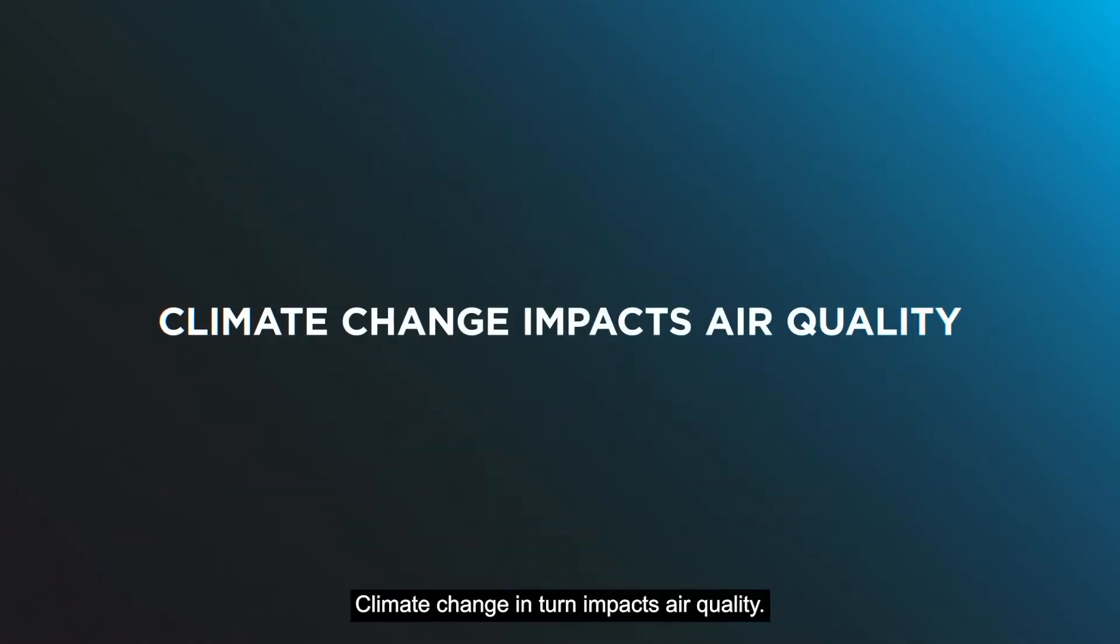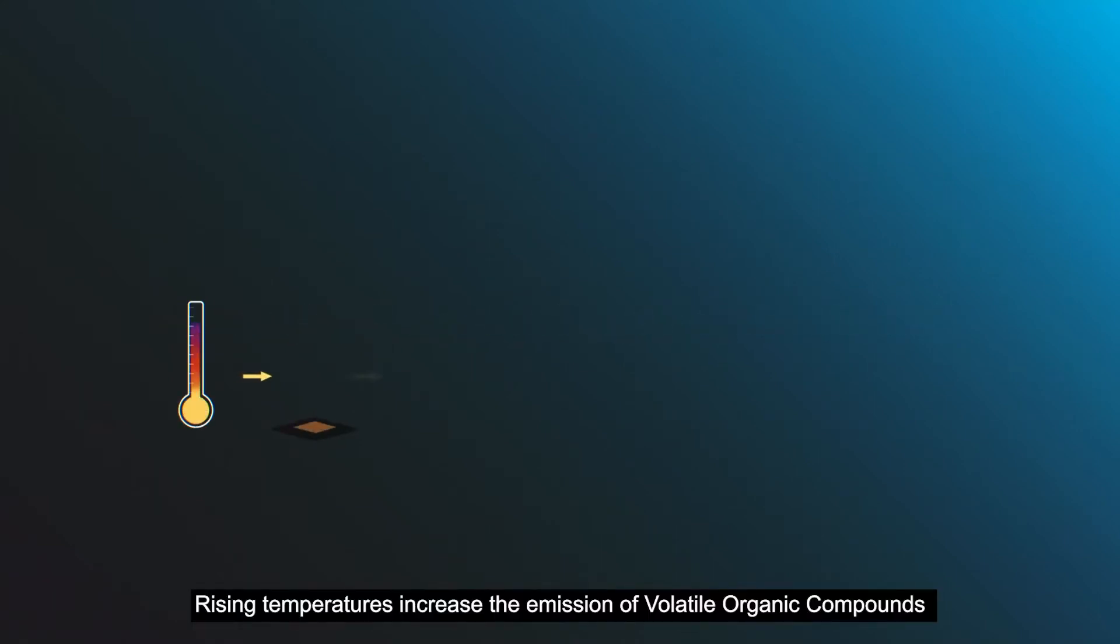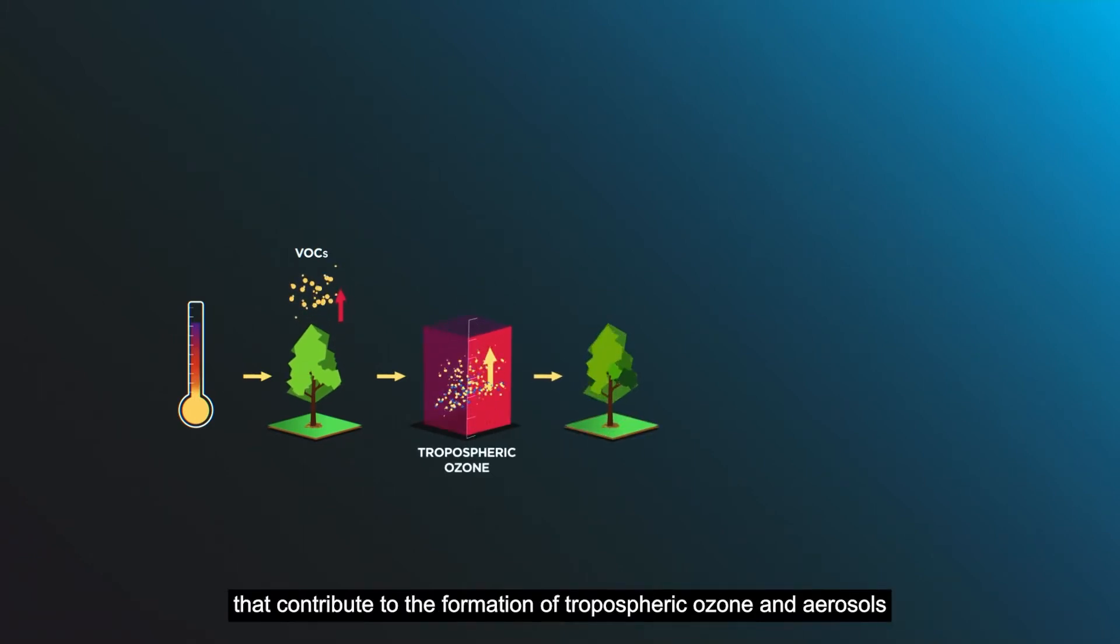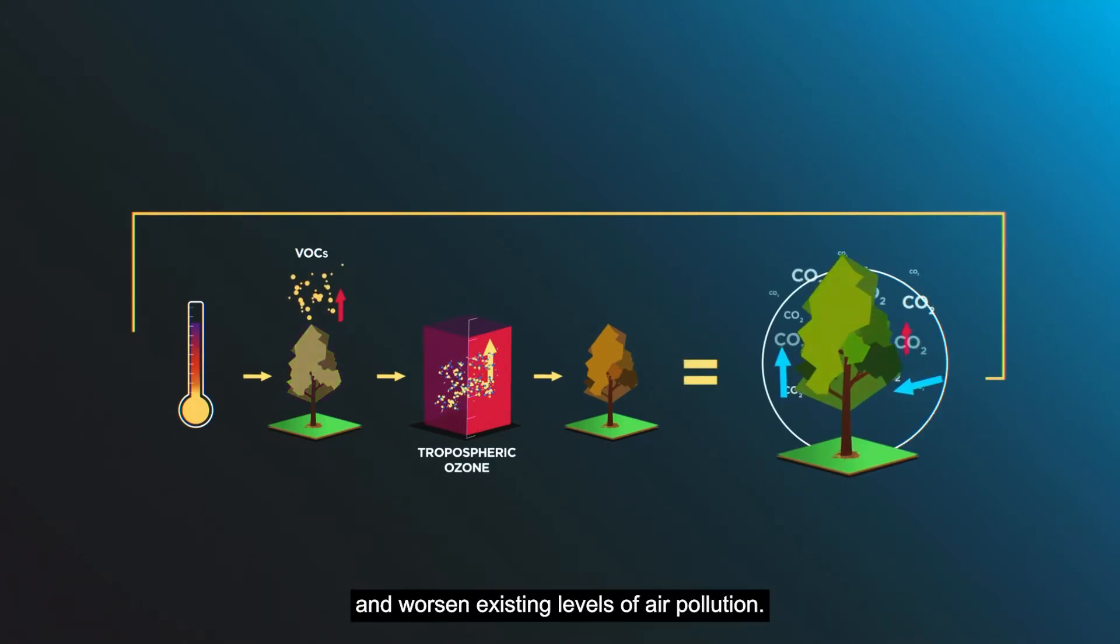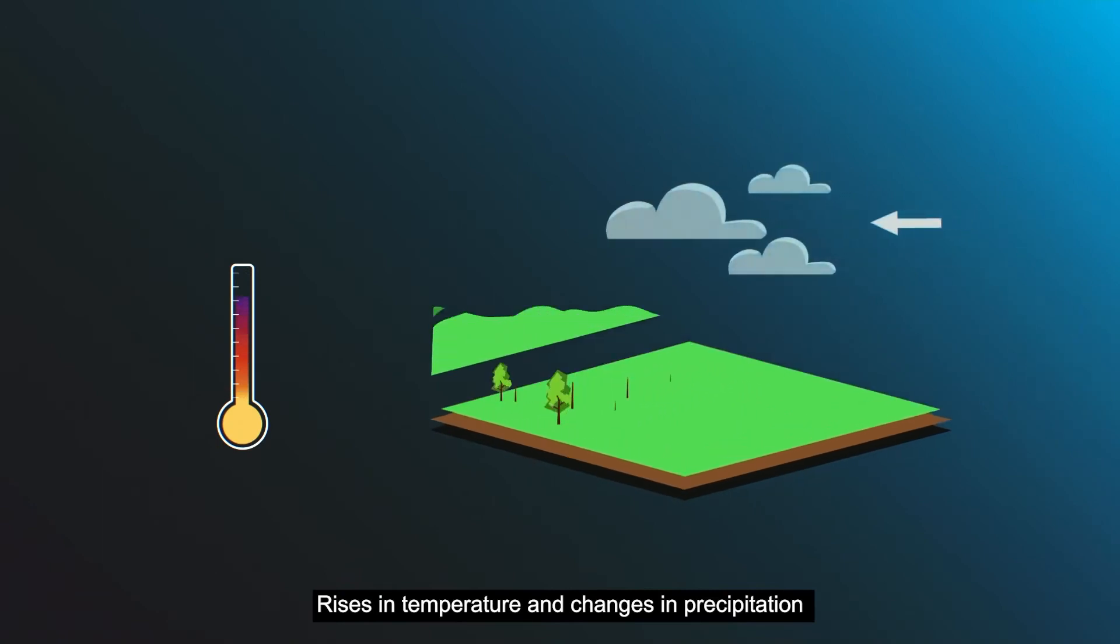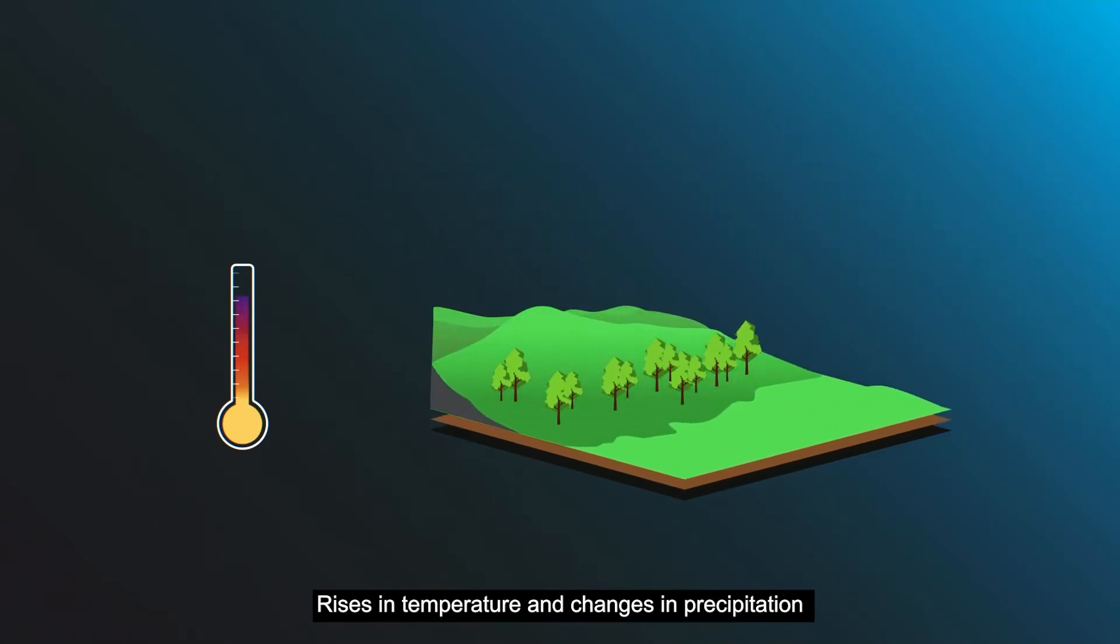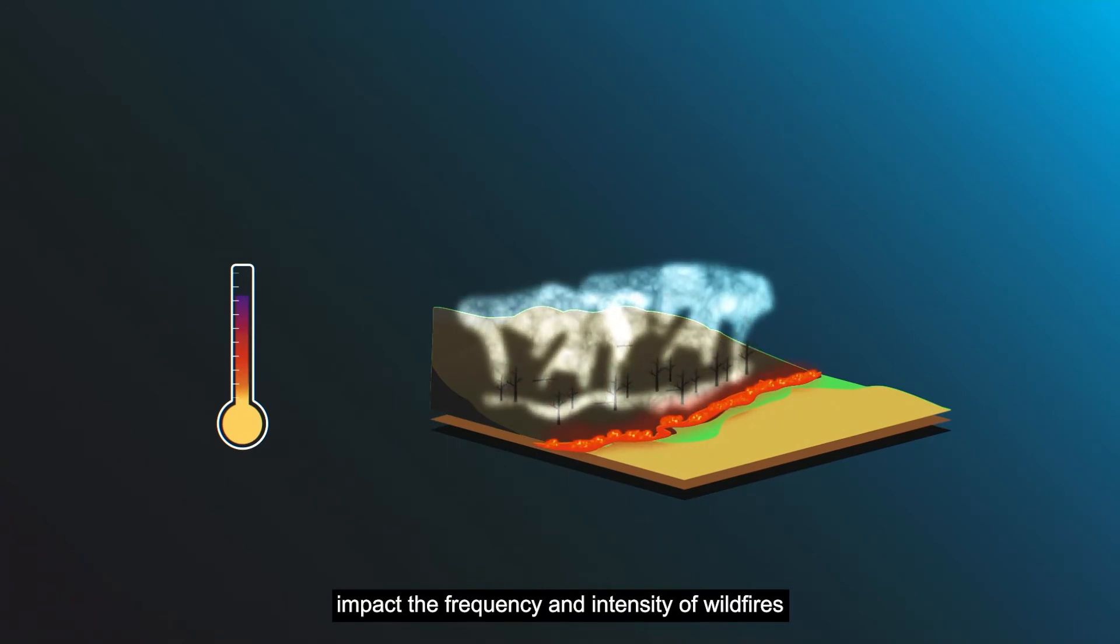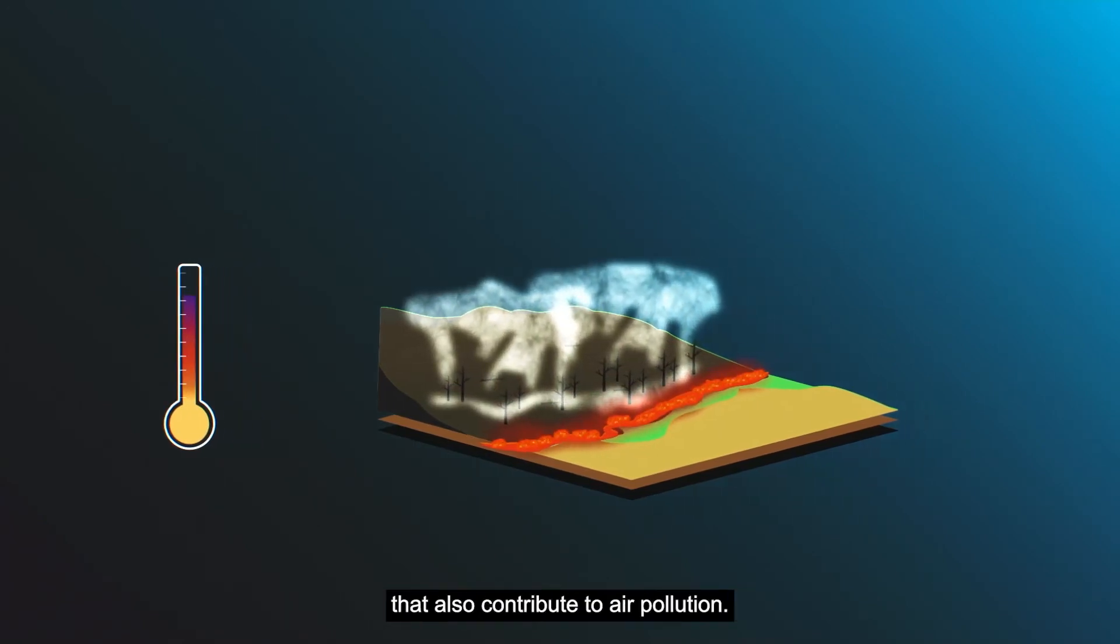Climate change in turn impacts air quality. Rising temperatures increase the emission of volatile organic compounds that contribute to the formation of tropospheric ozone and aerosols, and worsen existing levels of air pollution. Rises in temperature and changes in precipitation impact the frequency and intensity of wildfires that also contribute to air pollution.